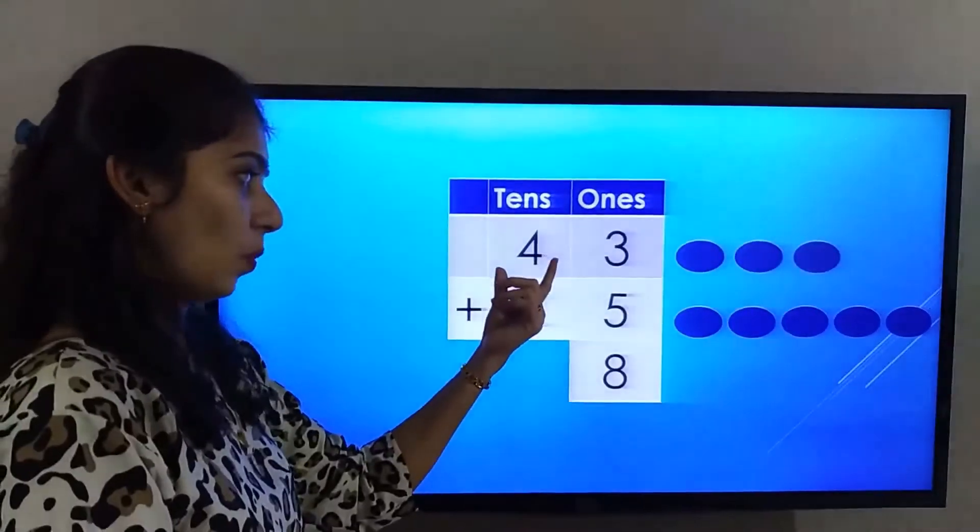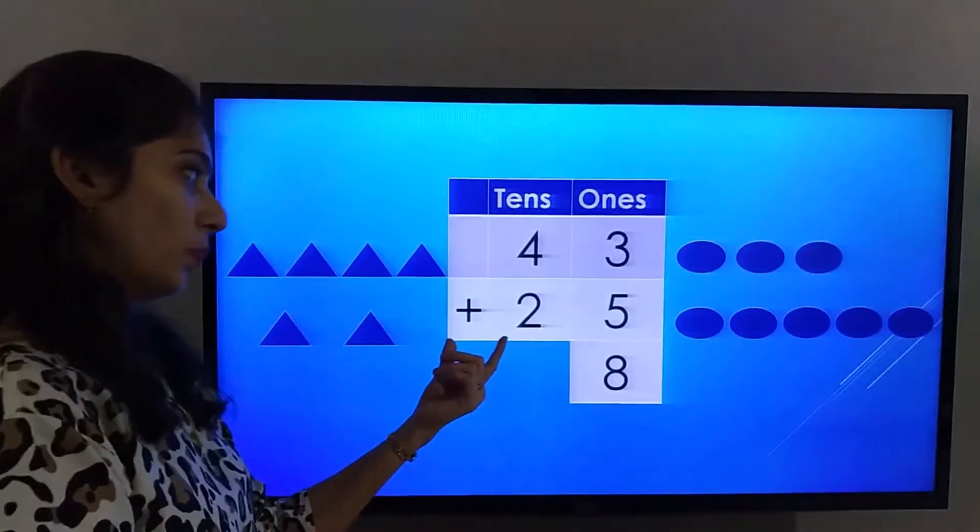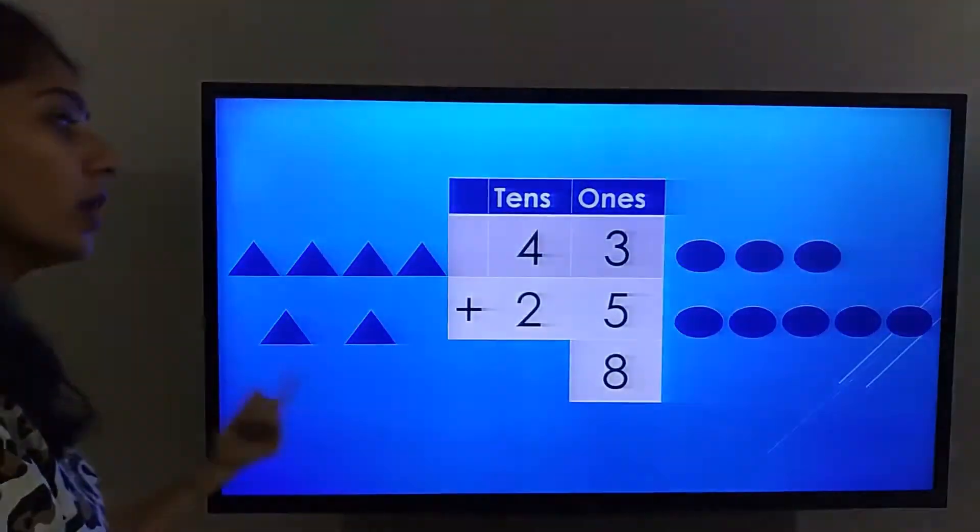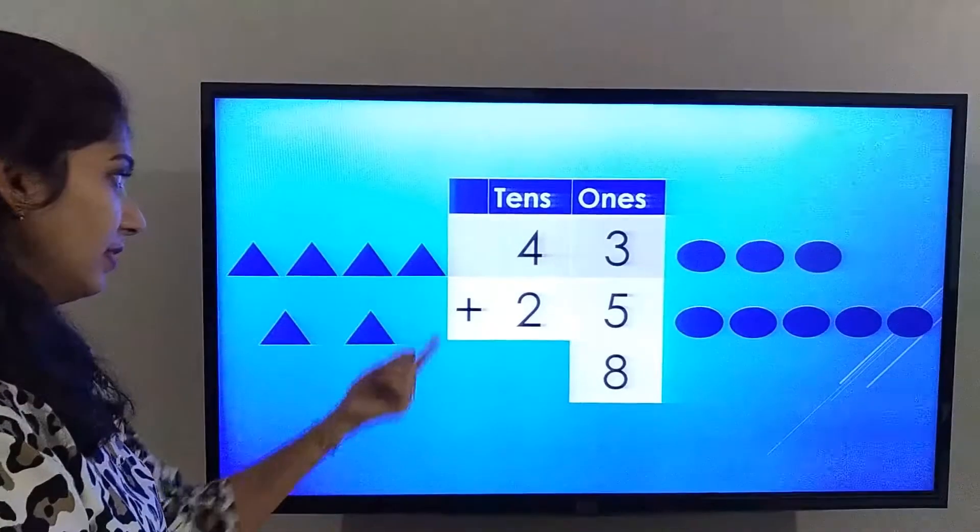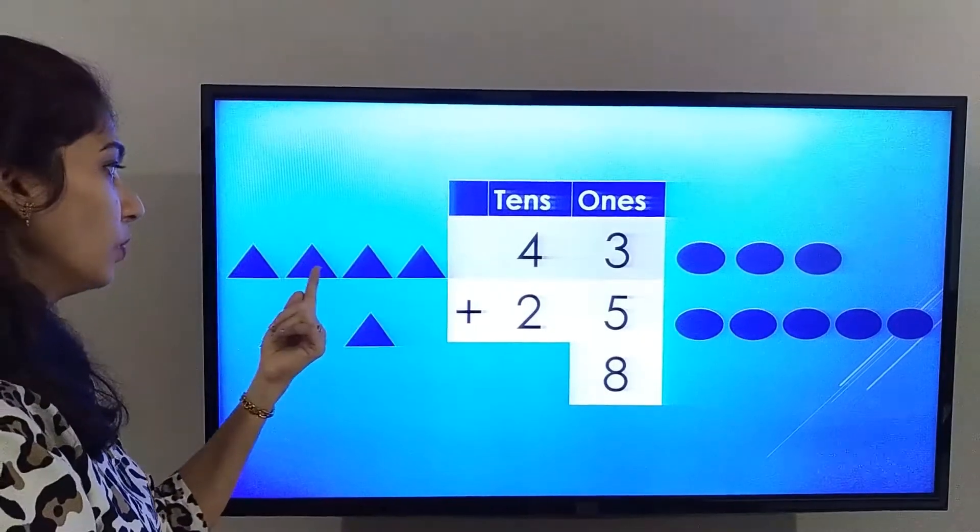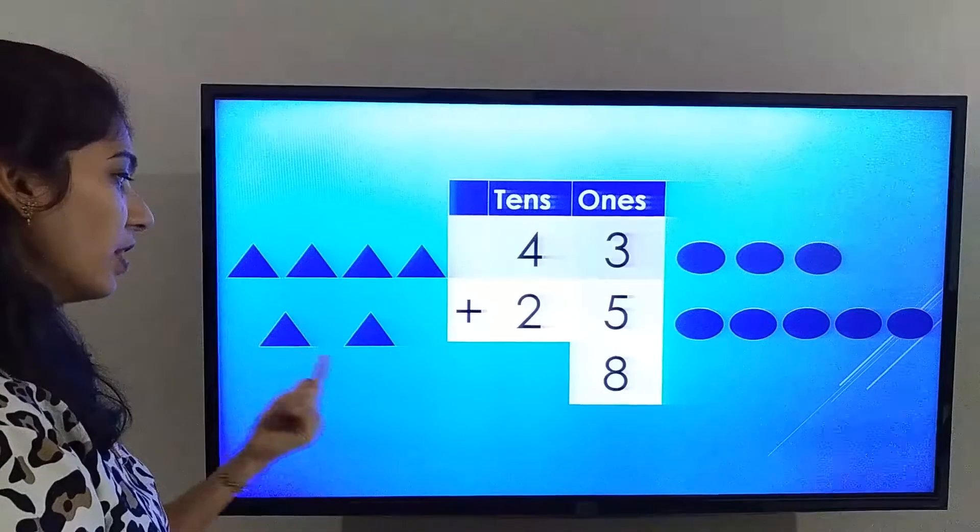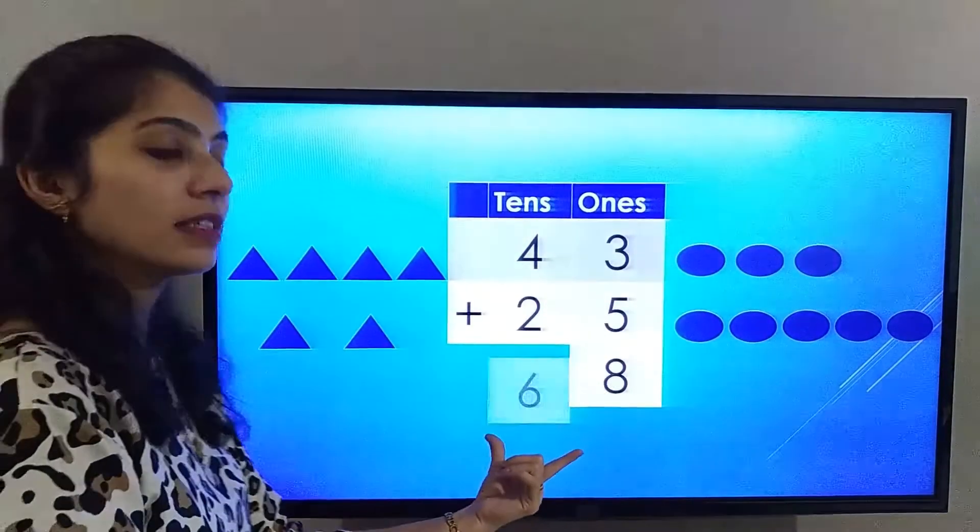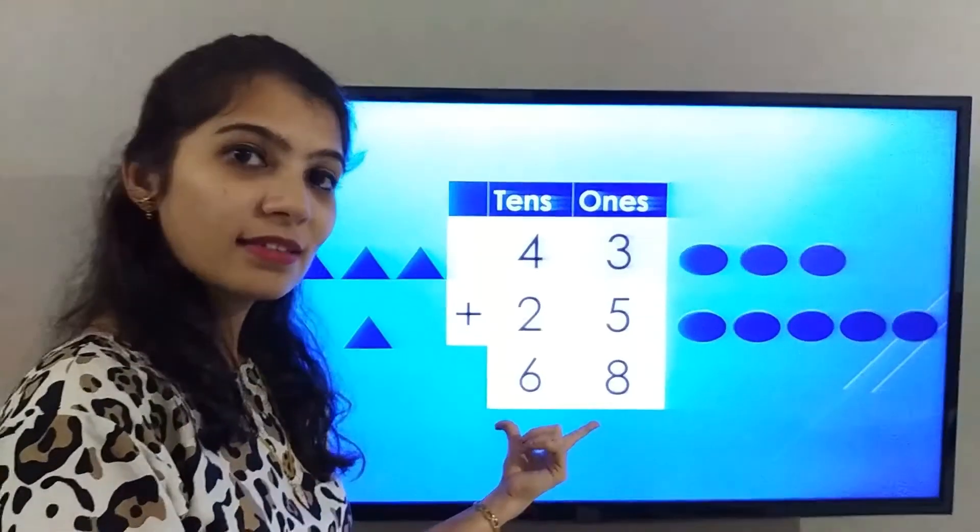tens place is 4 plus 2. Let's count all the triangles together. 1, 2, 3, 4, 5, 6. The answer in the tens place is 6.